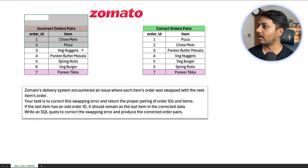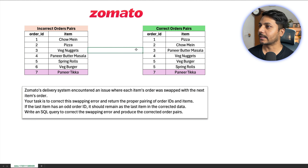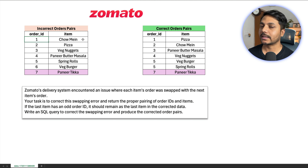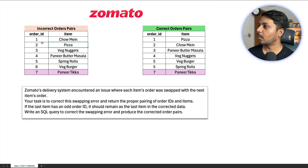Here is the incorrect order pair and here is the correct order pair. We need to first look at two order IDs. Order ID 1 is incorrectly showing as Chowmin, and order ID 2 is showing as Pizza. So we need to swap them — Pizza will have order ID 1 and Chowmin will have order ID 2.